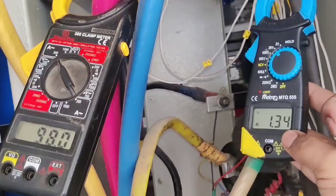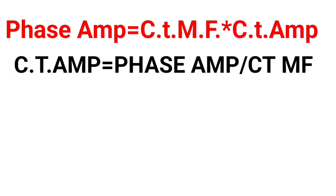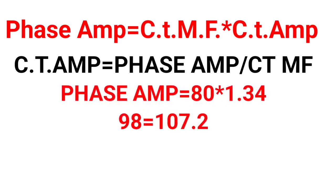We have two formulas to identify whether a CT is OK or defective. First formula: Phase ampere = CT multiplying factor × CT ampere. Second formula: CT ampere = Phase ampere ÷ CT multiplying factor. Using the first method, phase ampere = 80 × 1.34 = 107 amperes. But in actual, we find 98 amperes in R phase.